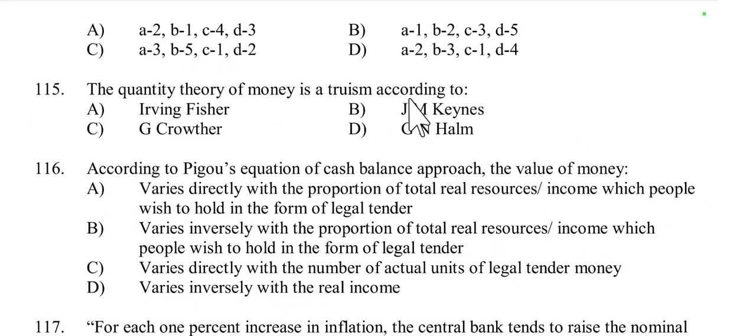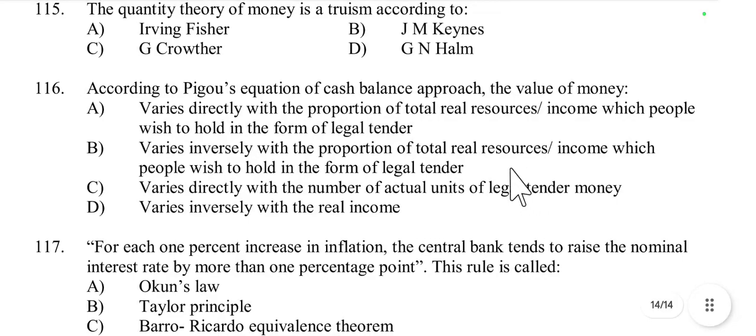Question number 115: The quantity theory of money is a truism according to Keynes. Keynes, particularly in his Treatise on Money, criticized the classical quantity theory of money, suggesting it is a tautology or truism under certain conditions, arguing it doesn't fully explain the complexities of an economy — especially in the short run where liquidity preference and the interest rate play crucial roles.